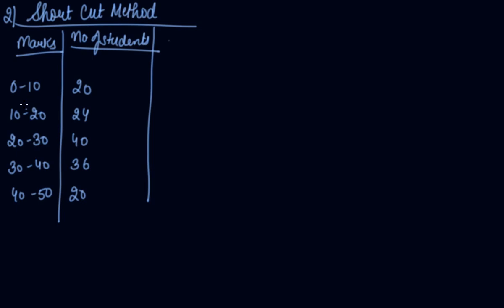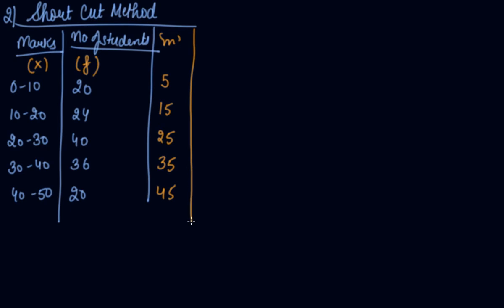Now we will solve the same question using the shortcut method. Again, x is the marks variable and f is the frequency. Find the mid-values: 5, 15, 25, 35, and 45. Now take an assumed mean from these mid-values — let's take the assumed mean as 25.